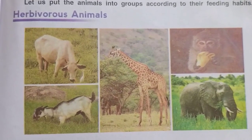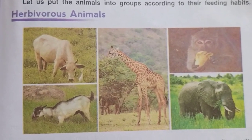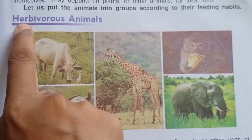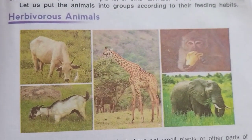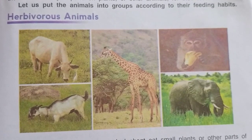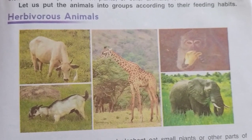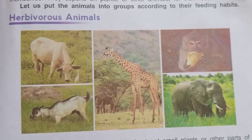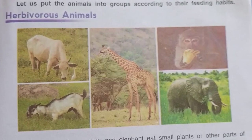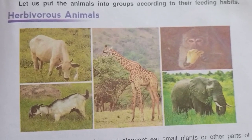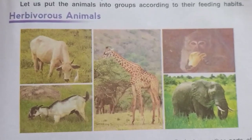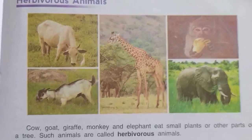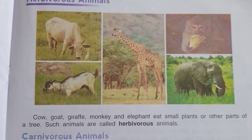The first category is herbivorous animals. If you see the word herbivorous, you will find the word herb. We have studied the word herb in chapter number 2, Plants Around Us. Herb is a type of plant. So herbivorous animals means the animals which eat plants. The animals which eat plants are called herbivorous.